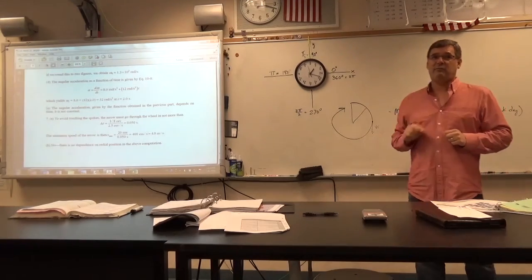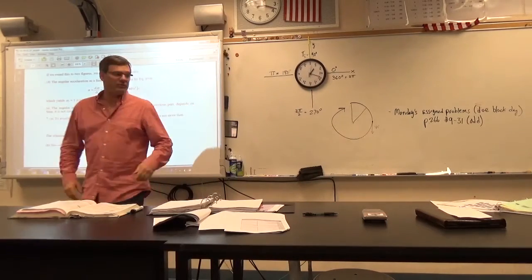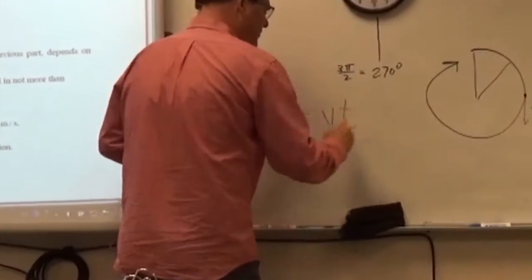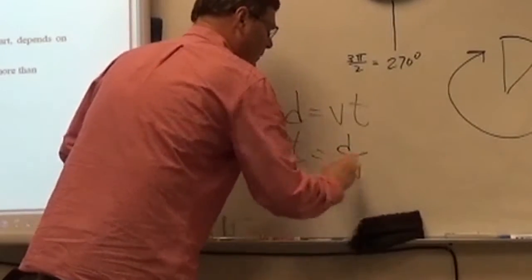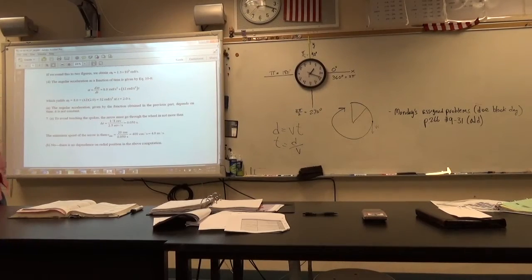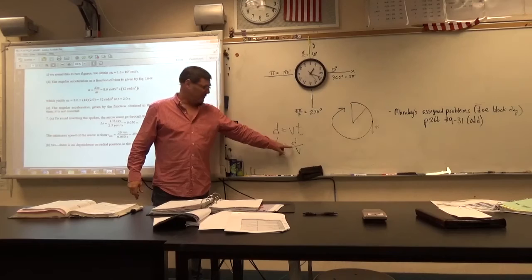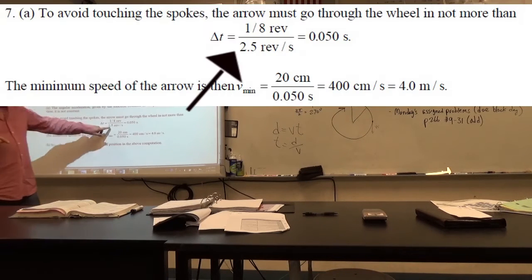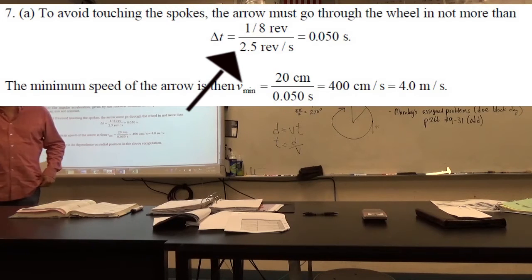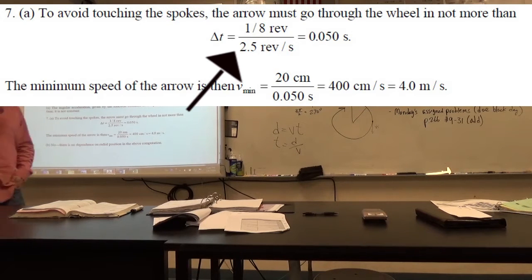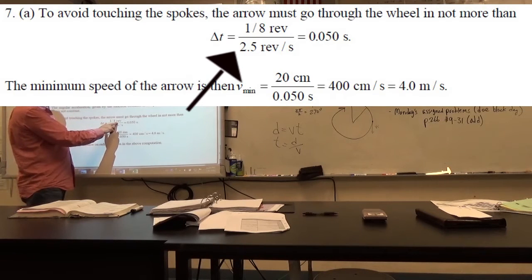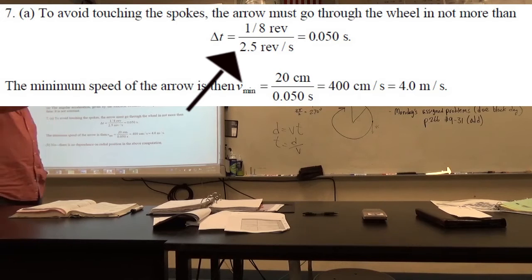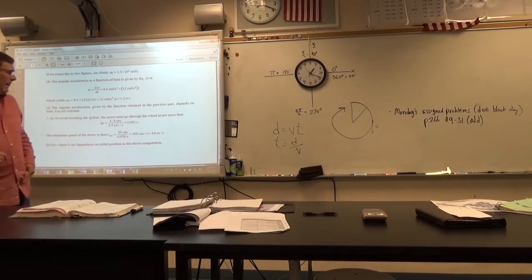So how fast do I need to shoot the arrow? I'm going to use distance equals velocity times time, solve for time. Translating to angular variables: divide the angular displacement by the angular velocity. It's rotating two and a half revolutions per second, and the displacement is one pie wedge — one eighth of the circle. So one eighth of a revolution divided by two and a half revolutions per second gives me five hundredths of a second.